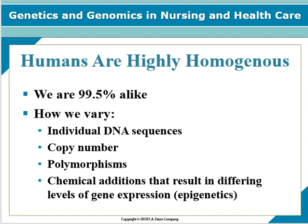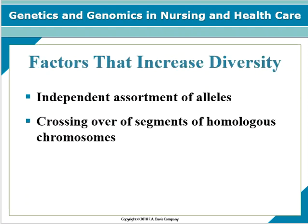The genetic information that tends to be passed down from generation to generation with the least variation is mitochondrial DNA. Factors that increase diversity include independent assortment of alleles and crossing over segments of homologous chromosomes, with larger chromosomes being more likely to display that diversity.